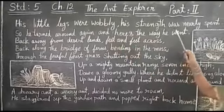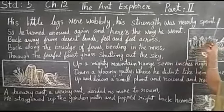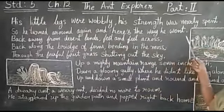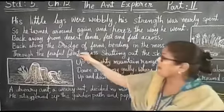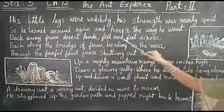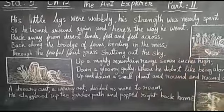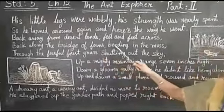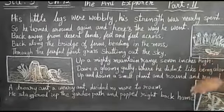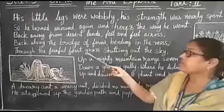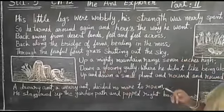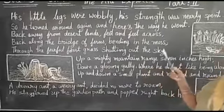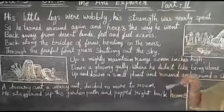The ant's little legs were wobbly and shaking, with no strength left. All his strength was spent and he was turning around, going back from the desert. He came to the land, walking feet and feet across. He came to the bridge of ferns where the grasses were bending on the moss, and through the fearful forest the grass was so high it was really fearful for him. He felt the sky was shut because he could not see — he was under the grasses.